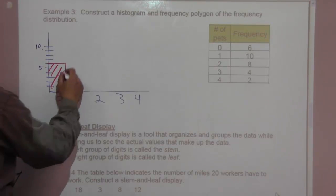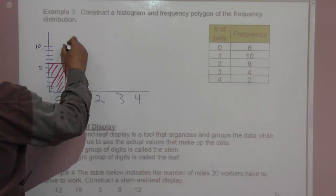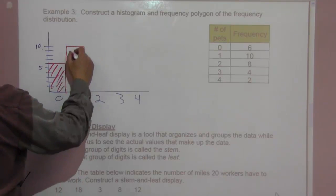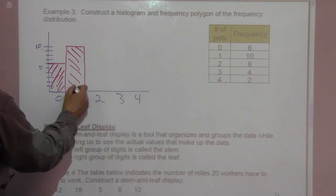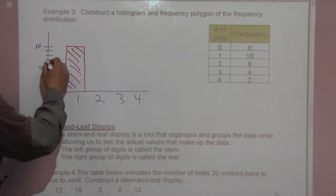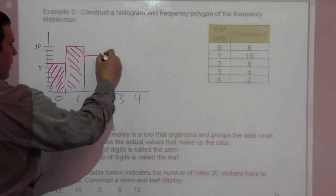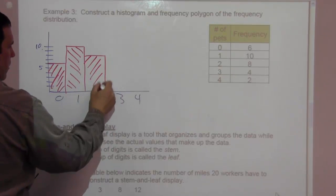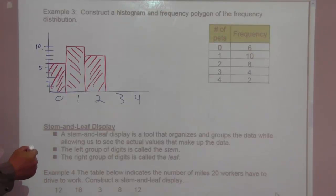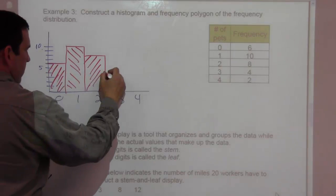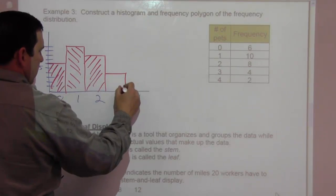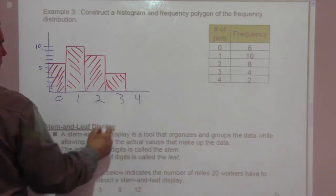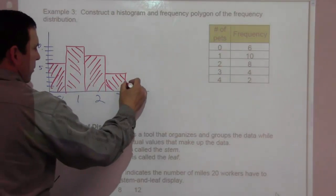For one pet, there were ten people, so it's going to go up to ten across and down. For two pets, there are eight people, so it's going to go eight over and down. For three pets, there are four people. And for four pets, there were two people.